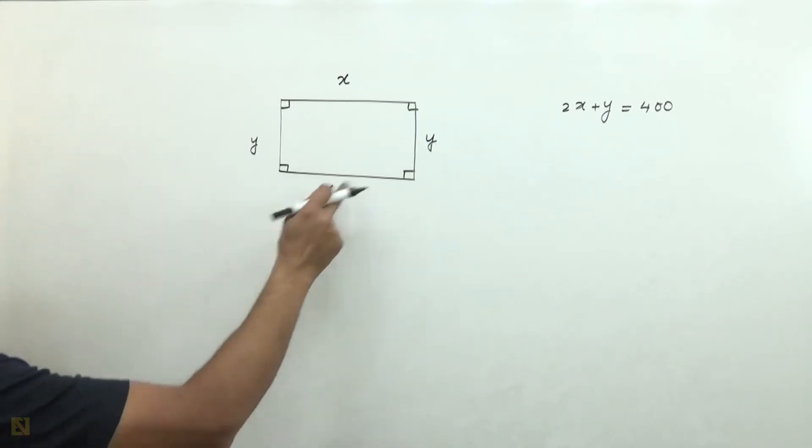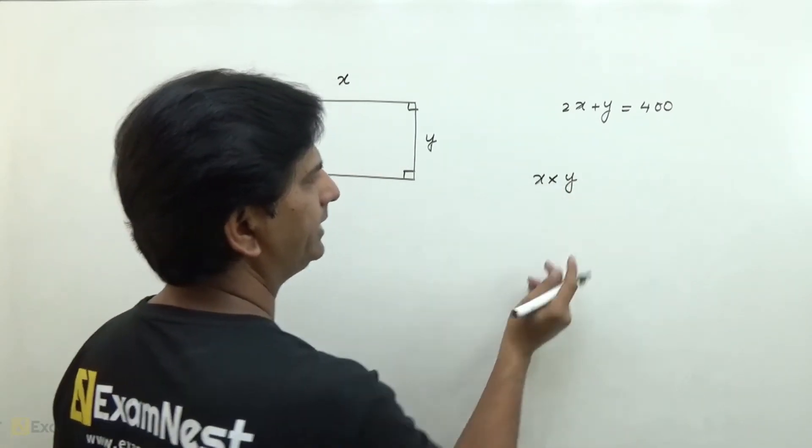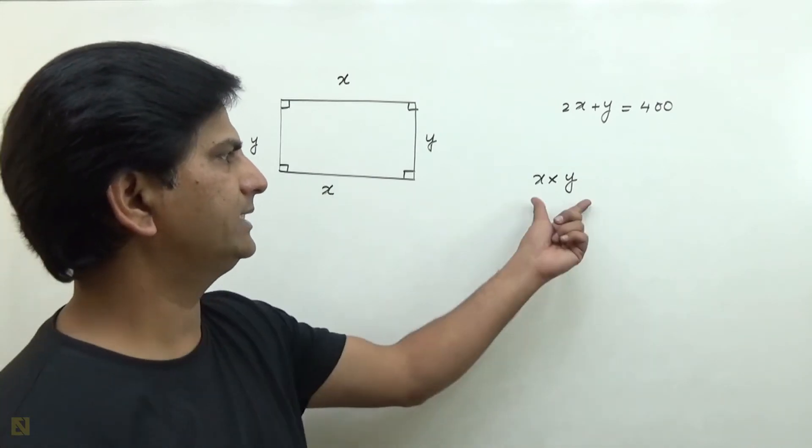One important property is that the area of rectangle is base into height, so x into y. We have to maximize this.